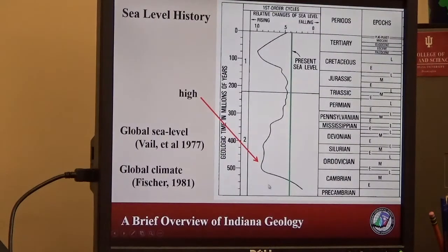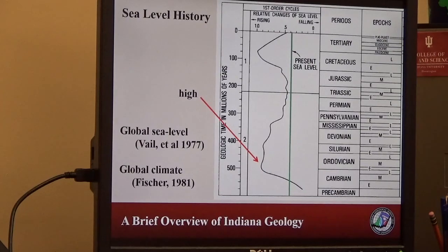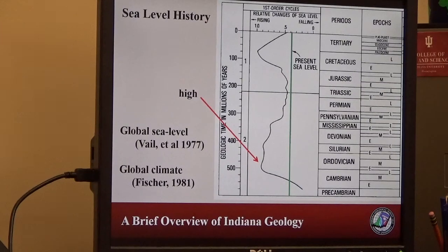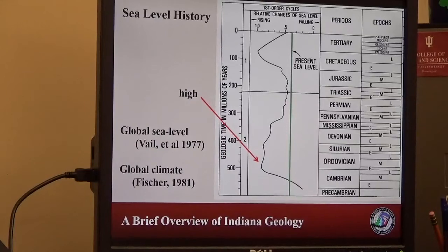One of the reasons is global sea level. During the Cambrian period, sea levels were the second highest in Earth history. At that point in time, Indiana is submerged, and if at any time the conditions become right for carbonate production, then we're going to get limestones or dolomites being produced. In time periods in which sediment would come in from Canada or the Appalachian Mountain region, that's going to shut down the carbonate factory and we'll get shales.